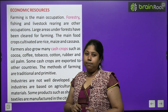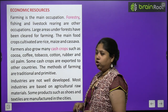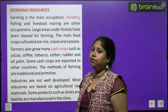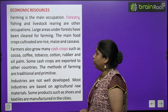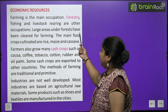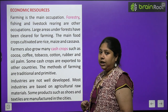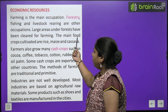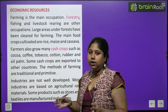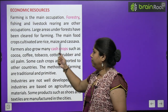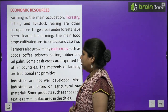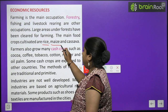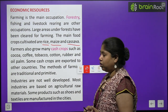Now let's read about economic resources. Farming is the main occupation because there are many agricultural possibilities here — the soil is quite fertile, sunlight is in abundance, and rainfall is also good. Therefore, farming is the main occupation here. Forestry, fishing, and livestock rearing are other occupations. Large areas of forest have been cleared for farming. The main food crops cultivated are rice, maize, and cassava.